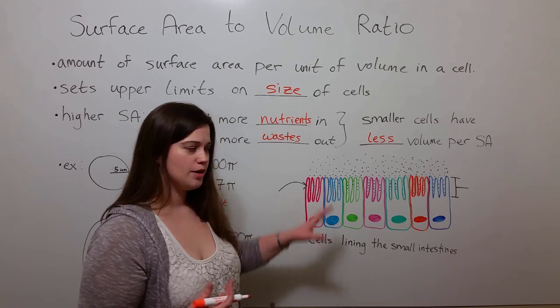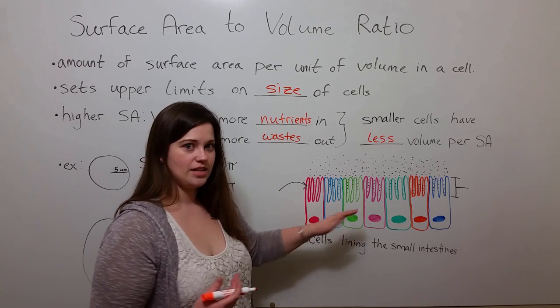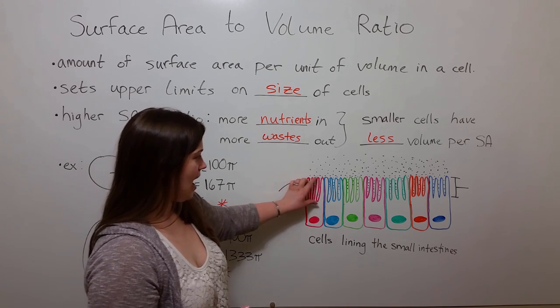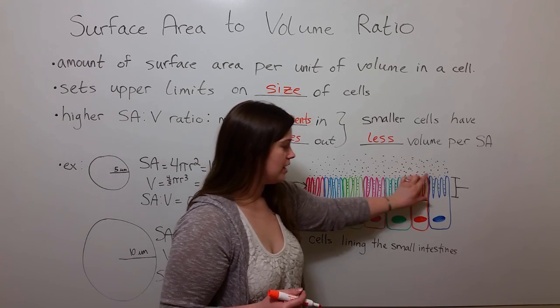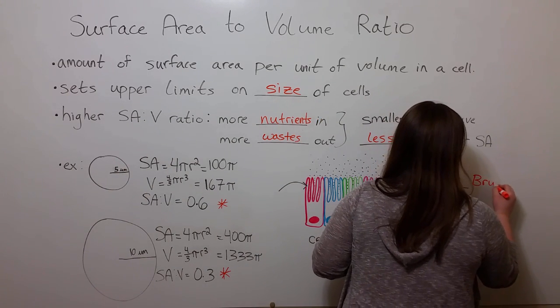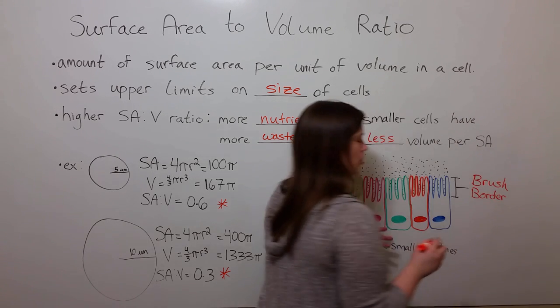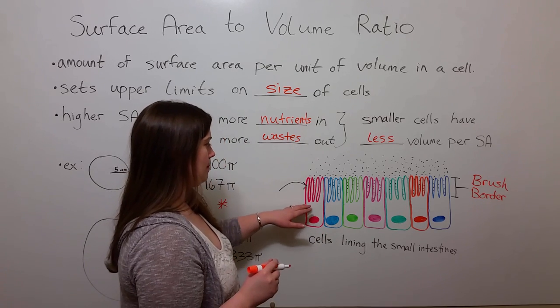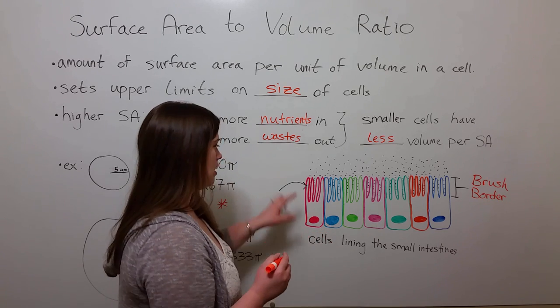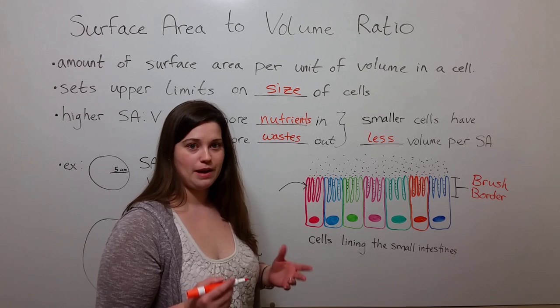The black dots are the nutrients that have been digested by the digestive system. And these cells that line the small intestines, it's their job to bring in the digested nutrients into the cell, to absorb the nutrients. What they do is they have this layer that is called a brush border. The brush border is made up of cell appendages called microvilli.